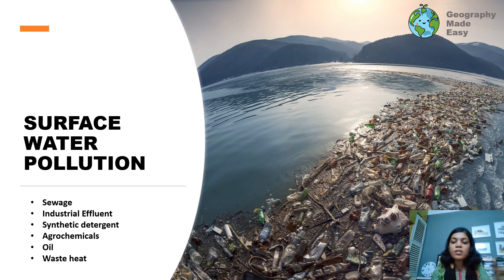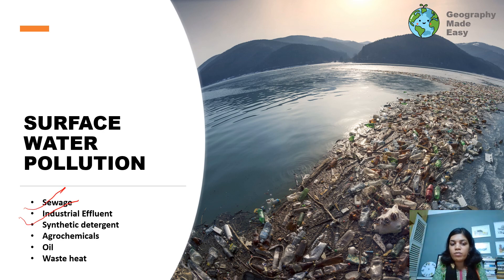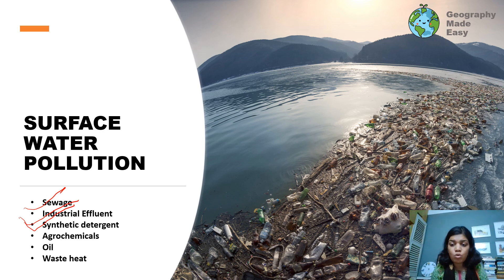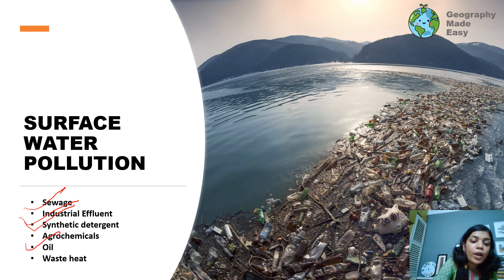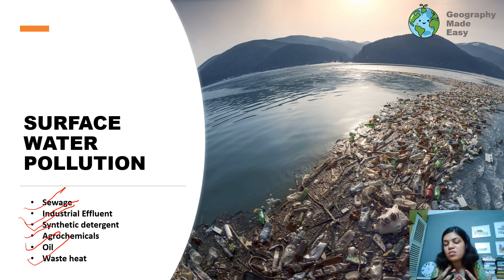What are the surface water pollution causes? We have sewage, industries putting garbage including chemicals and plastics into rivers, synthetic detergents — when washing clothes the soap mixes with water and is also harmful. Industries also put different chemicals into the water. We have agrochemicals used in agriculture mixing into soil, groundwater, and surface water. We have oil spills, and waste heat — excess heat from industries entering the water can kill many living organisms there. So that is also a kind of pollution.